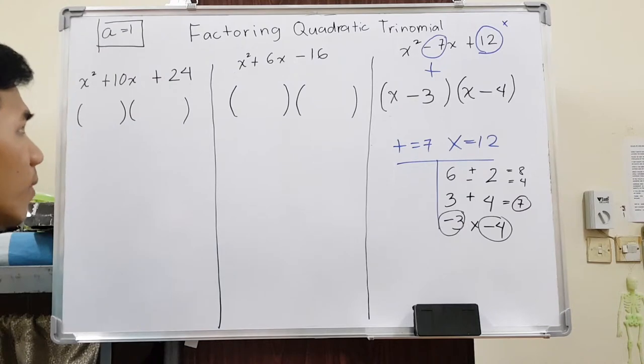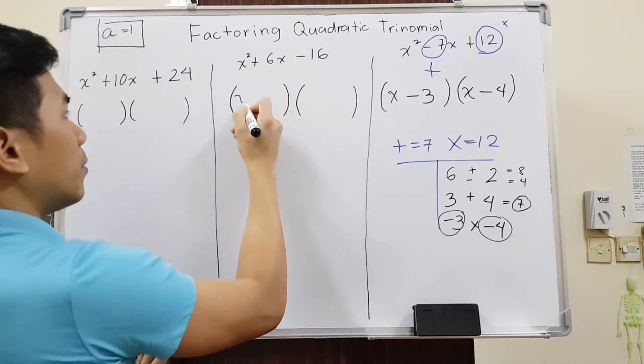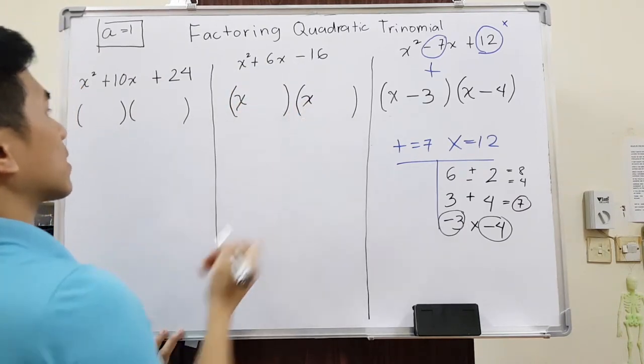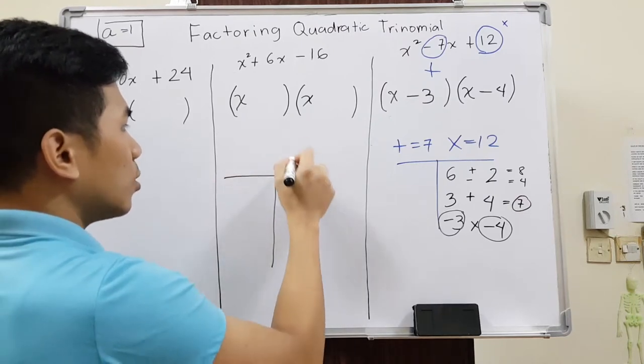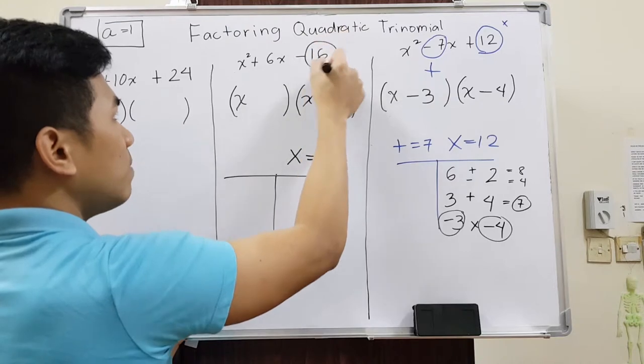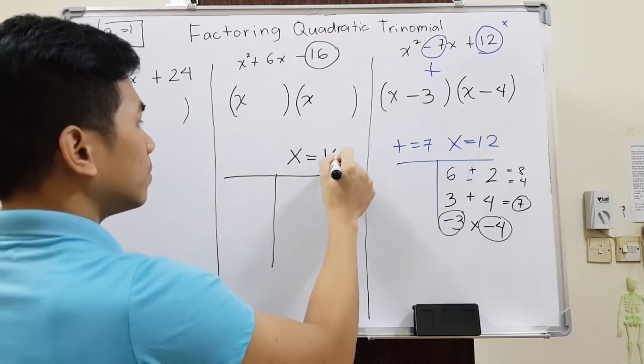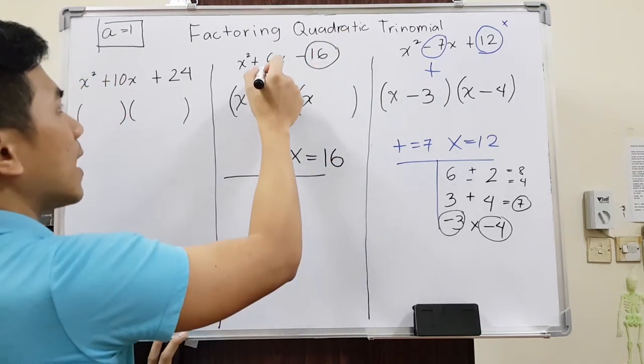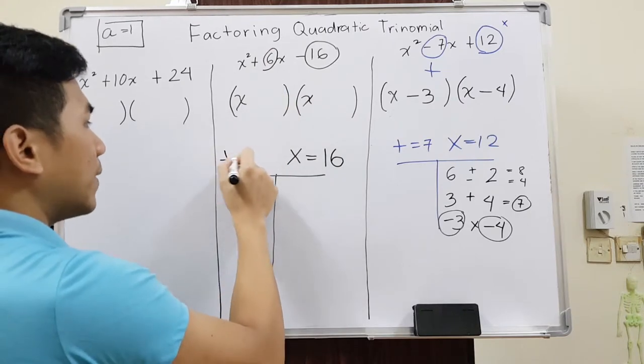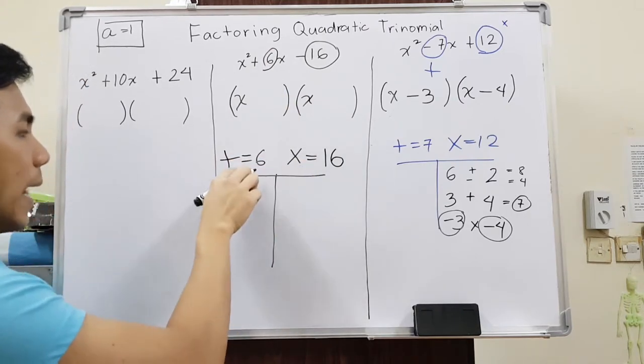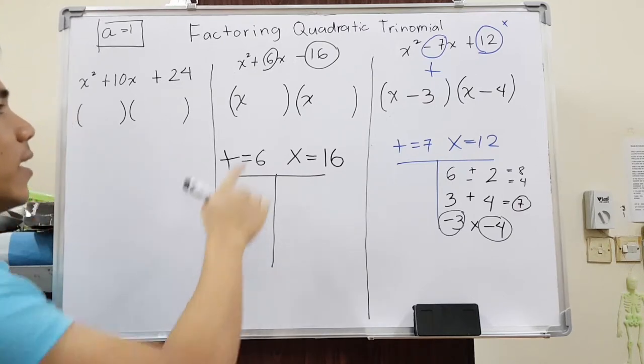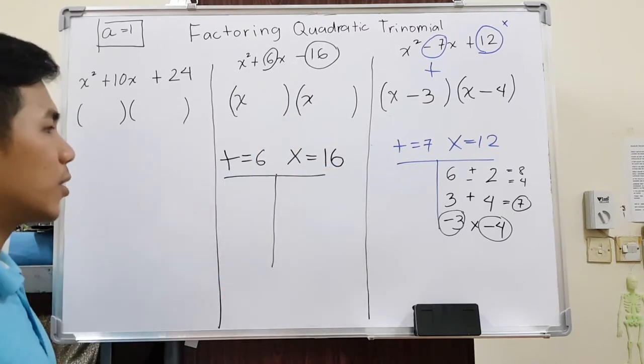Another example. First, I will write x, x. And then I will make a T-table here. Two numbers must multiply to 16 and it has to add up to 6. I'm just using a symbol: it multiplies to and adds up to. As you can see again, I ignored the negative and the positive, I'll just take the numbers.